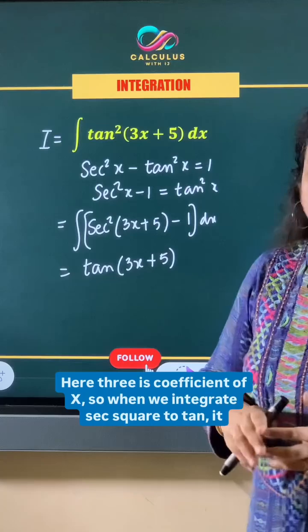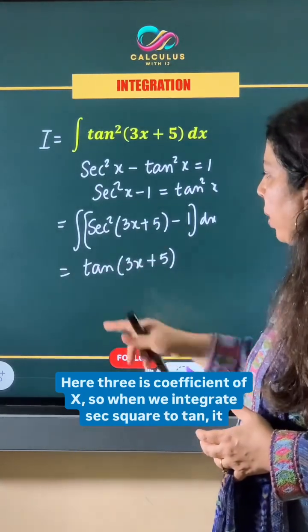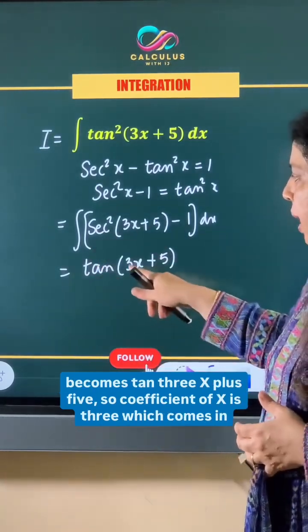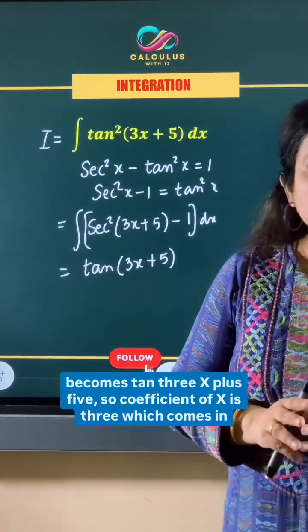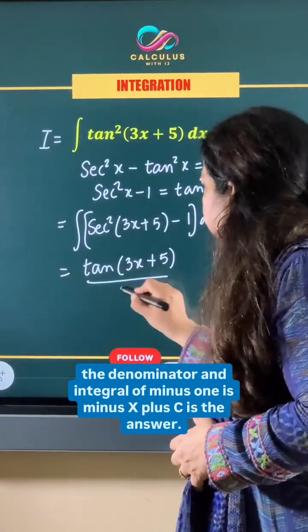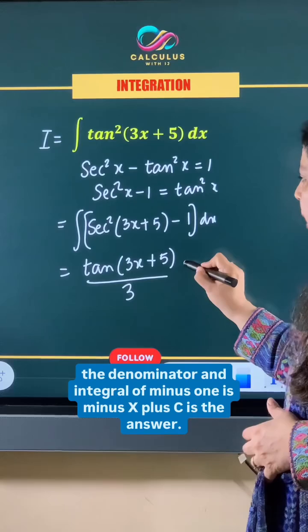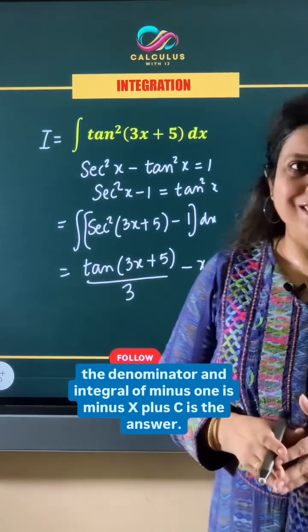Here 3 is the coefficient of x. So when we integrate sec² to tan, it becomes tan(3x+5). So coefficient of x is 3 which comes in the denominator and integral of -1 is -x plus c is the answer.